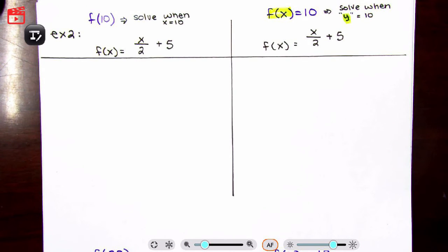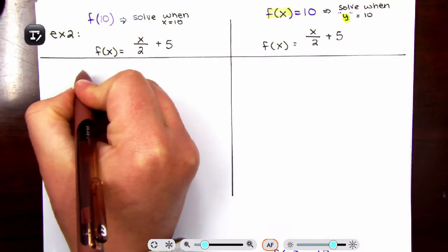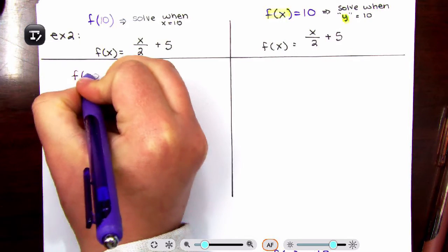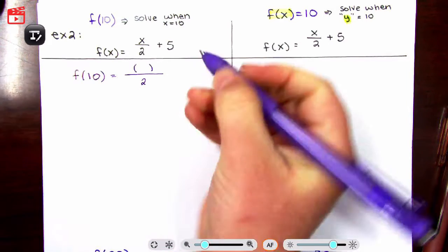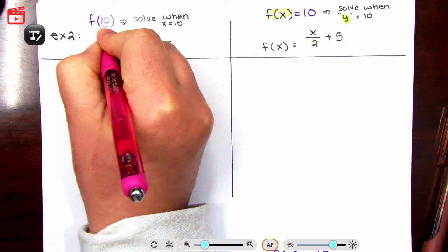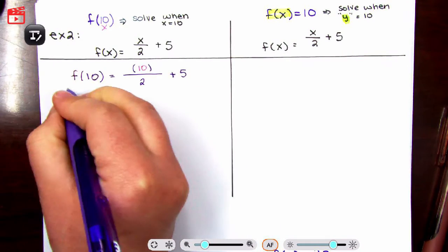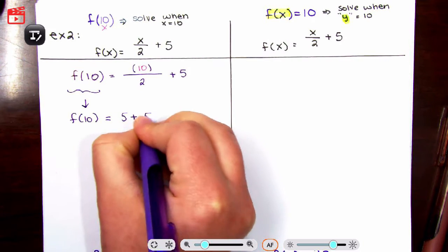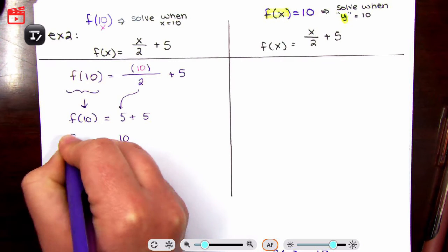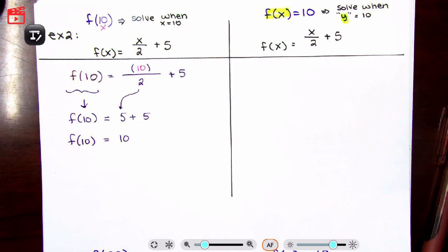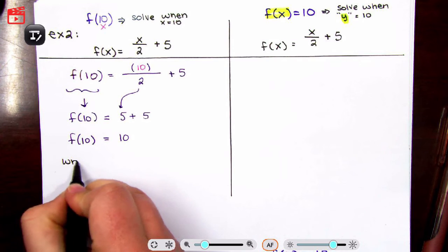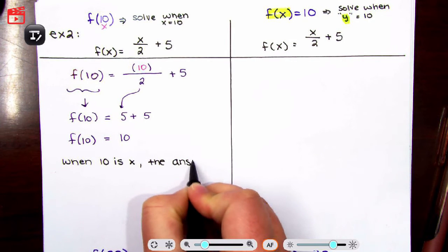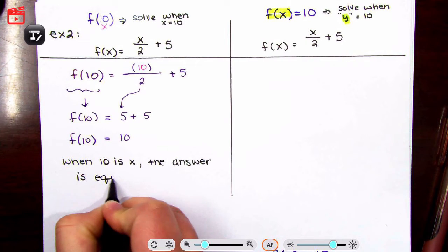Let's start with f of 10. f of 10 is equal to — anywhere you see an x, you're going to write 10. So this is your x value. Don't do anything to f of 10; f of 10 is just being copied. So 10 divided by 2 is 5, plus 5. And 5 plus 5 is 10. So when x is 10, the answer is 10. When 10 is x, the answer is equal to 10.